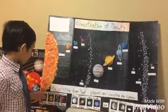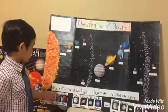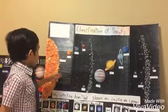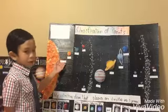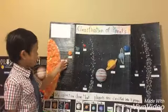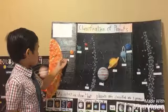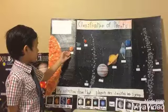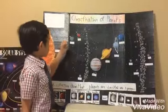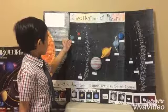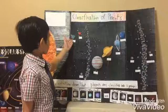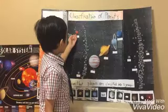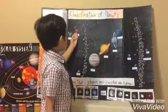Let's start with the inner planets or terrestrial planets. The first planet from the sun is Mercury, the smallest planet. The second planet from the sun is Venus, the hottest planet. The third planet from the sun is Earth, the only planet with life. The fourth planet from the sun is Mars, the red planet.